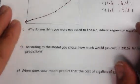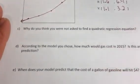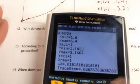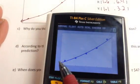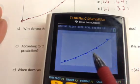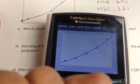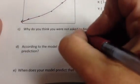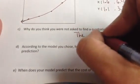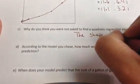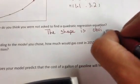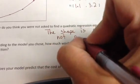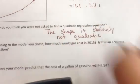Alright, we are ready to answer these questions. So first, why do you think that you weren't asked to find a quadratic? The reason why I'm not asked to find a quadratic is because I only have one half of the u. It would really force the calculator to make up these other points that are over here. And we don't want it to do that. So the shape is obviously not quadratic. It's close to linear, but it's definitely not quadratic.